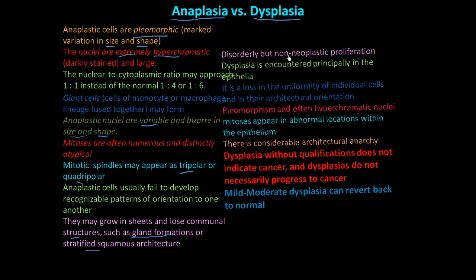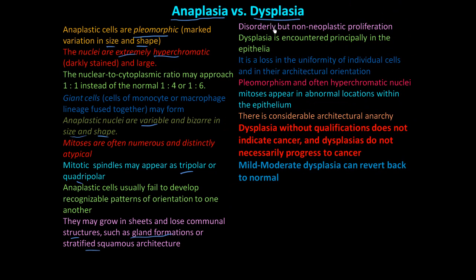Those are the characteristics of anaplasia. What are the characteristics of dysplasia? Dysplasia is disorderly but non-neoplastic proliferation. These cells are proliferating and there is disorder, but it is non-neoplastic — the cell DNA is not mutated. Dysplasia is encountered principally in epithelial tissue, which lines all body tissues and structures. Dysplasia is a loss of uniformity of individual cells and their architectural orientation.